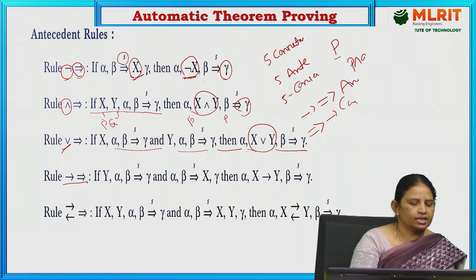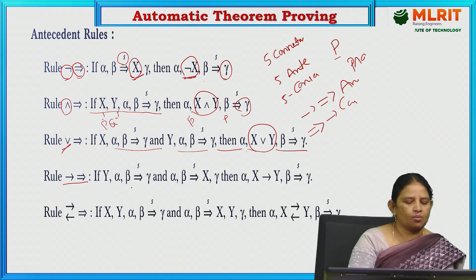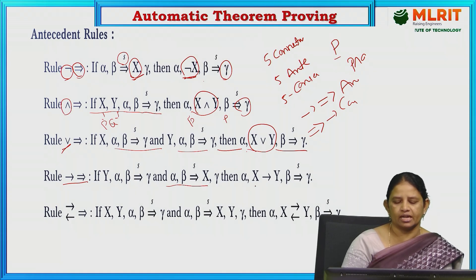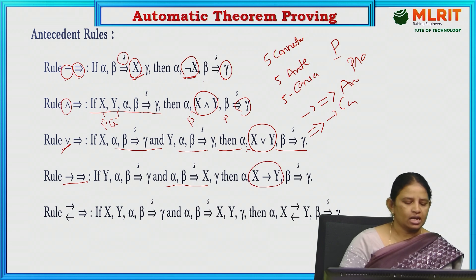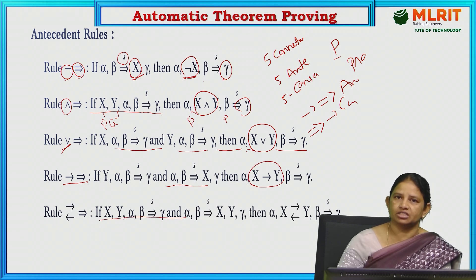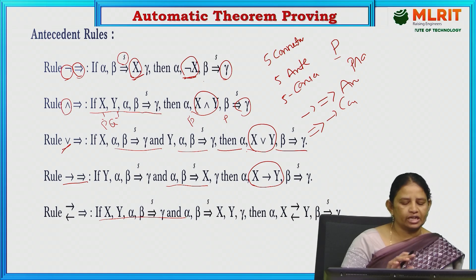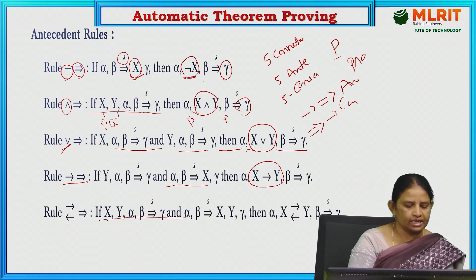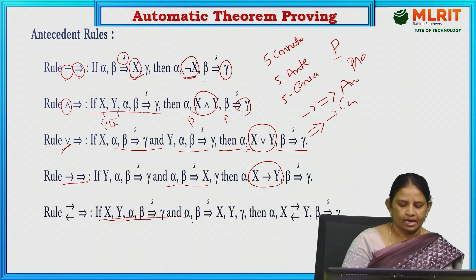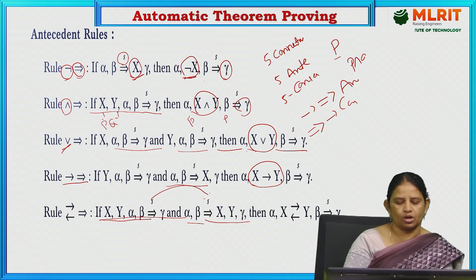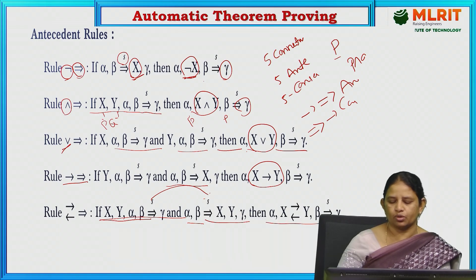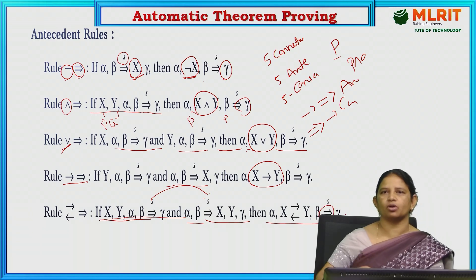That is the conditional law. If y comma alpha comma beta implies negation x, then you write the two string of formulas: x tends to y, x tends to y. The same thing we follow for the biconditional statement — we divide the values into two string of formulas: x comma y comma alpha comma beta, and alpha comma beta x comma y comma gamma. From these two sequences, we convert x biconditional y to the right-hand side.